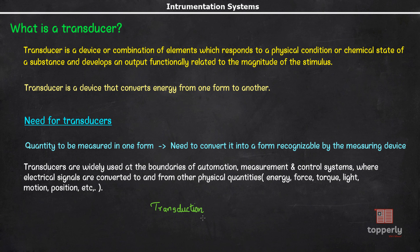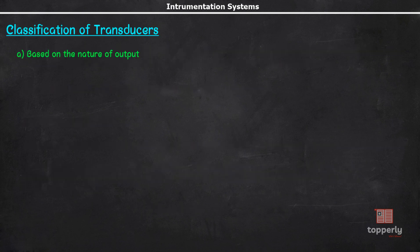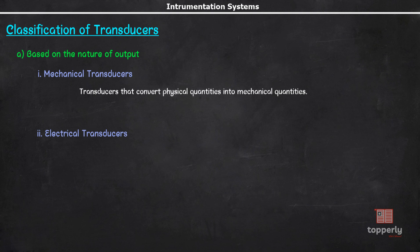Now, going to the classification of transducers, there are mainly two types of transducers based on the nature of output. And they are mechanical transducers and electrical transducers. Transducers that convert physical quantities into mechanical quantities are known as mechanical transducers. Strain gauge is an example of mechanical transducers.